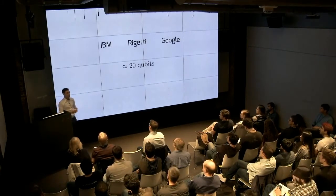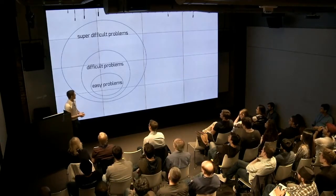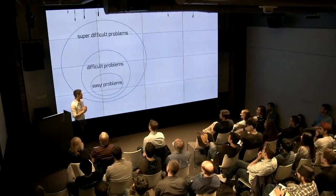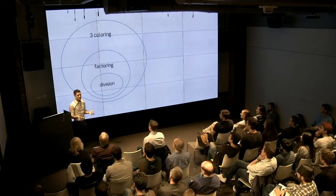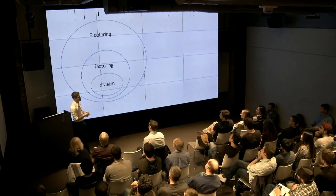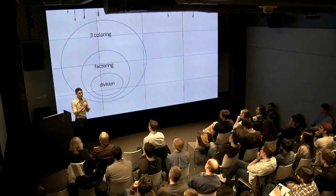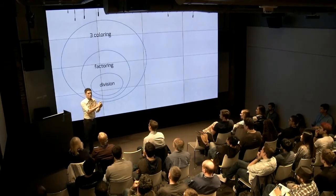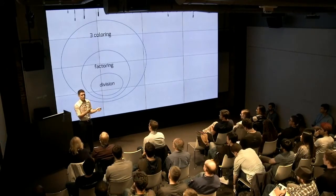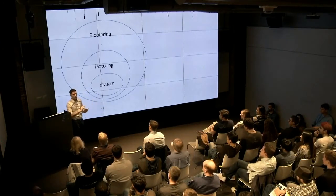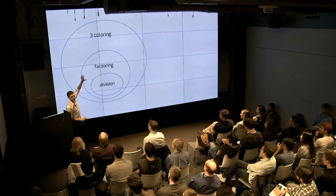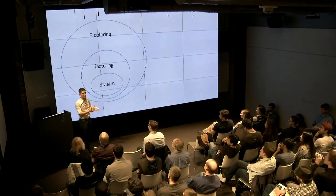Why do we care about building quantum computers? Because there are difficult problems to solve. There are easy problems, difficult problems, and super-difficult problems. Easy problems include division, multiplication, and adding two numbers. Factoring is a pretty difficult problem. A really difficult problem is, for example, three-coloring or three-SAT, or finding the minimum path through a set of cities visiting each at least once. Quantum computers are not going to solve all problems — they'll handle easy and difficult problems, but not the super-difficult ones. We don't yet know algorithms that will solve those.